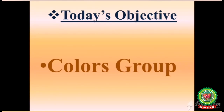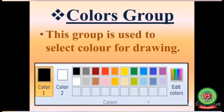Our today's objective is to learn about the colors group. The colors group is used to select color for drawing. Just like in real life you use a crayon kit or pencil color kit to fill color in drawing sheets, in the same way in the Paint program we use the colors group to select color for drawing. In this group, a number of colors are placed from where you can select any color.